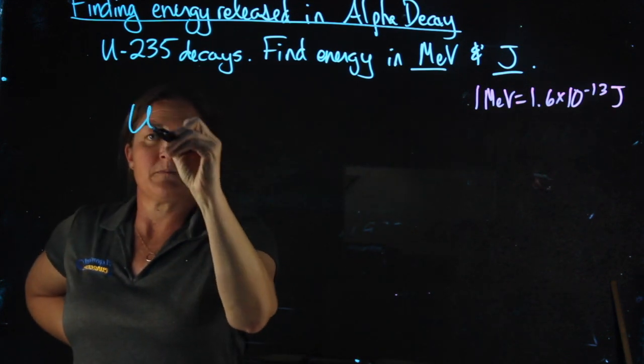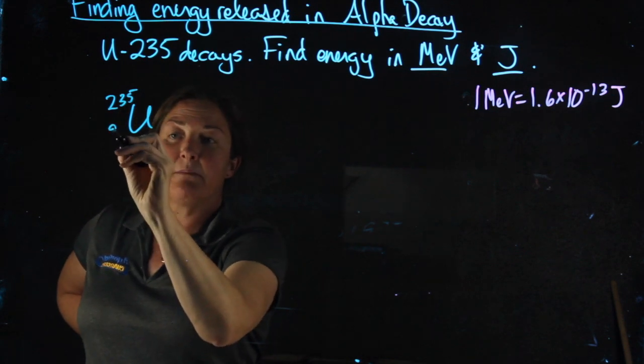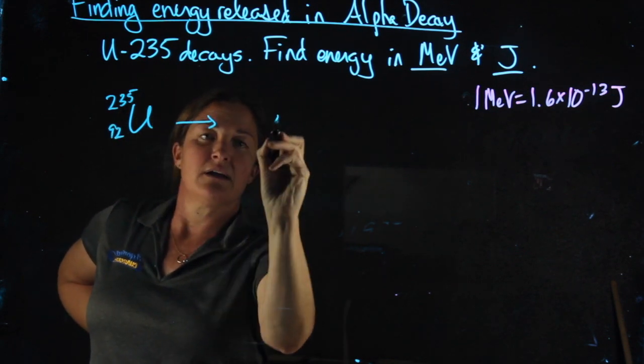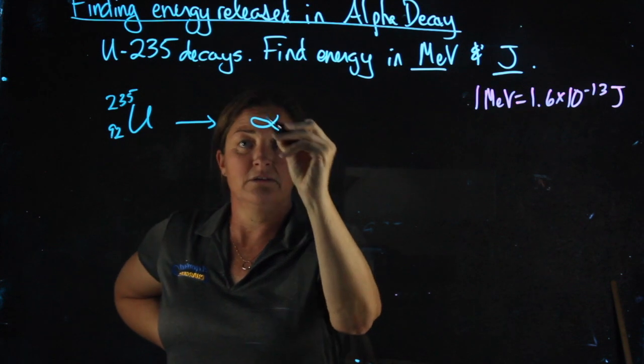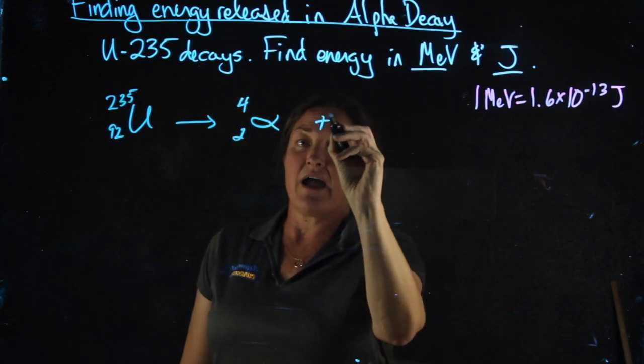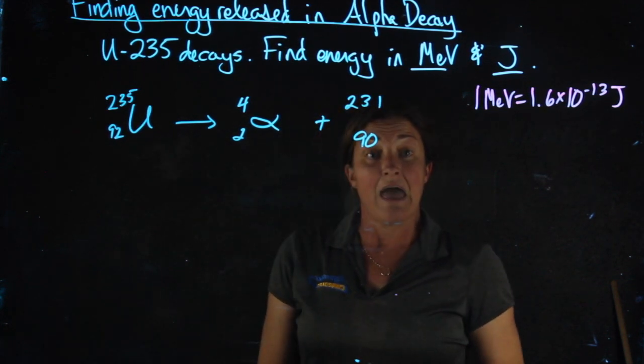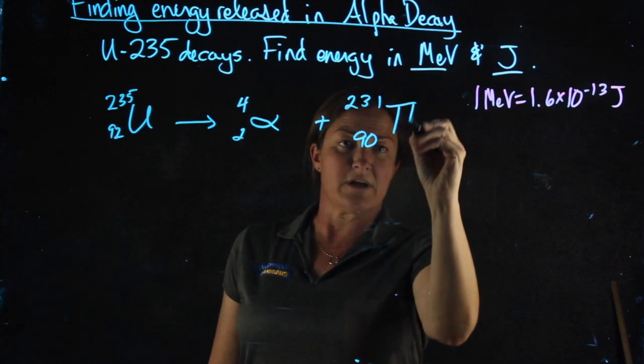Our decay equation, U-235, uranium has an atomic number of 92. It's going to release an alpha particle, an alpha is a 4-2. My other product will be 231 and 90. Element 90 is thorium.